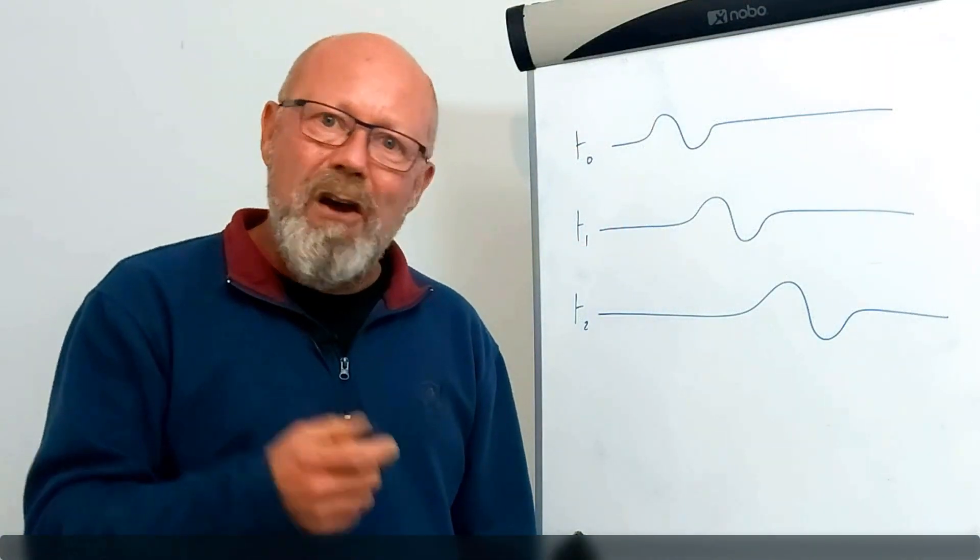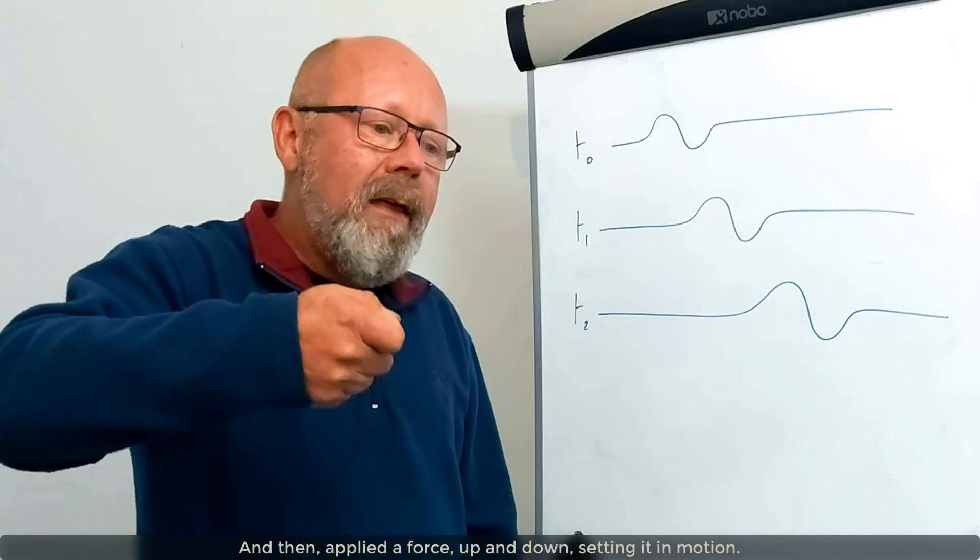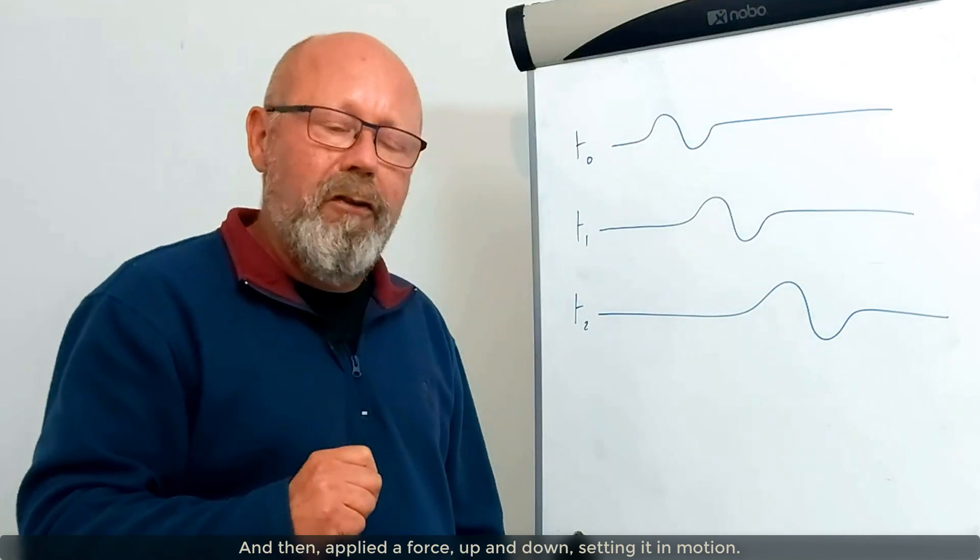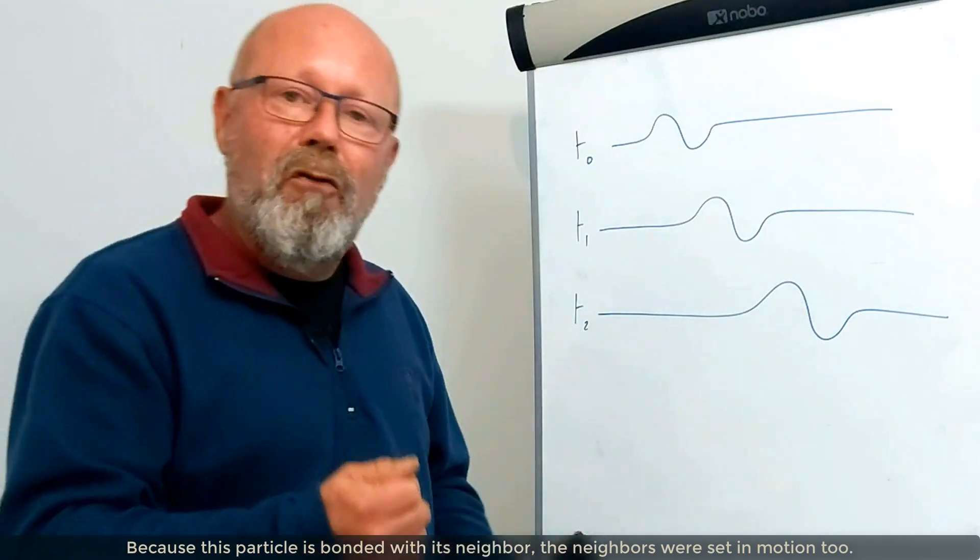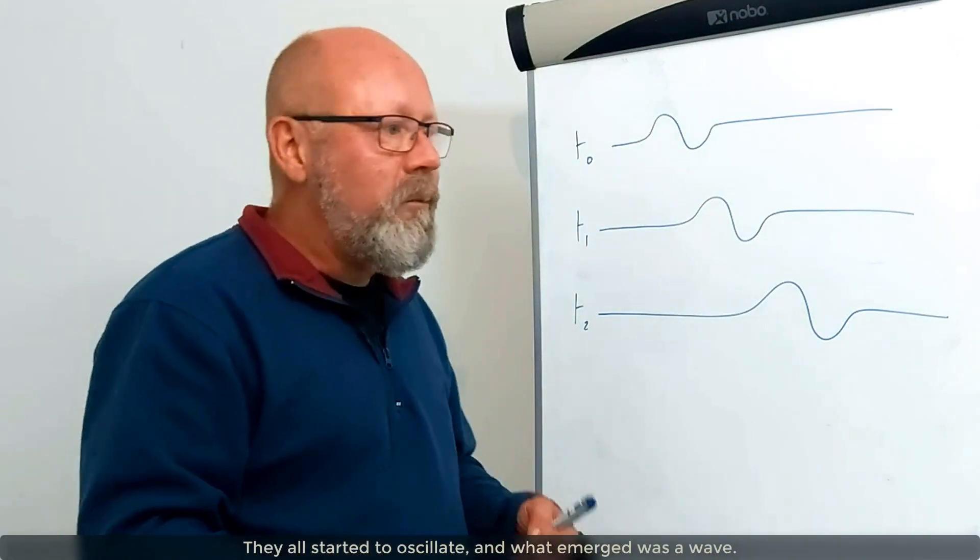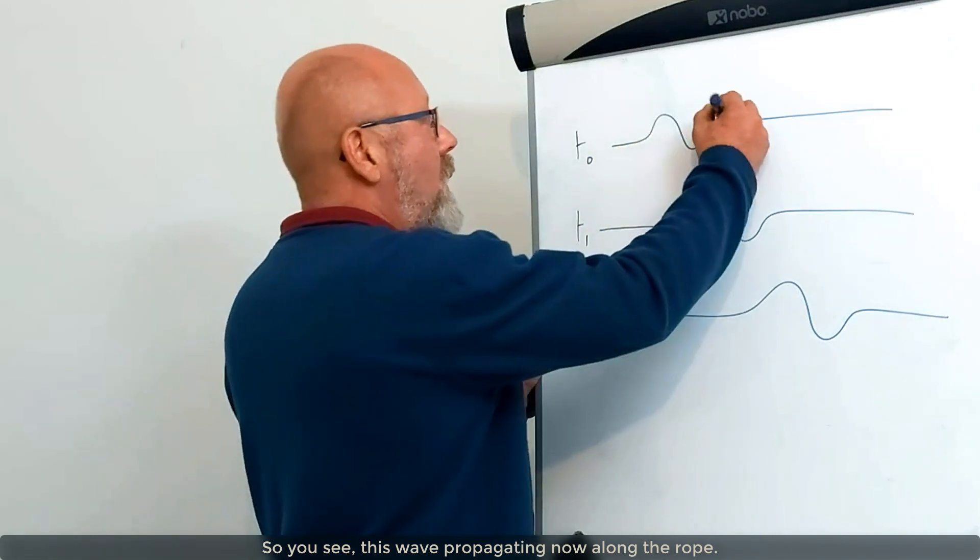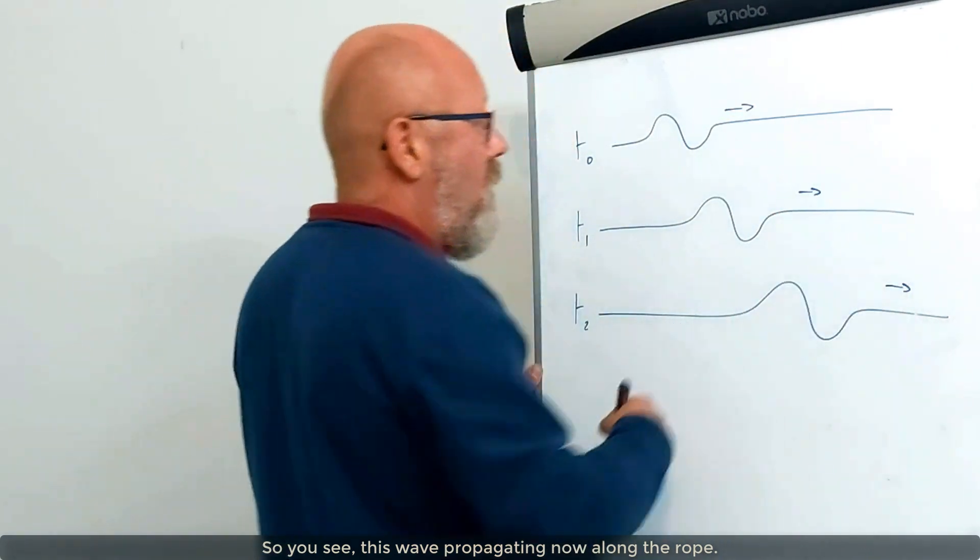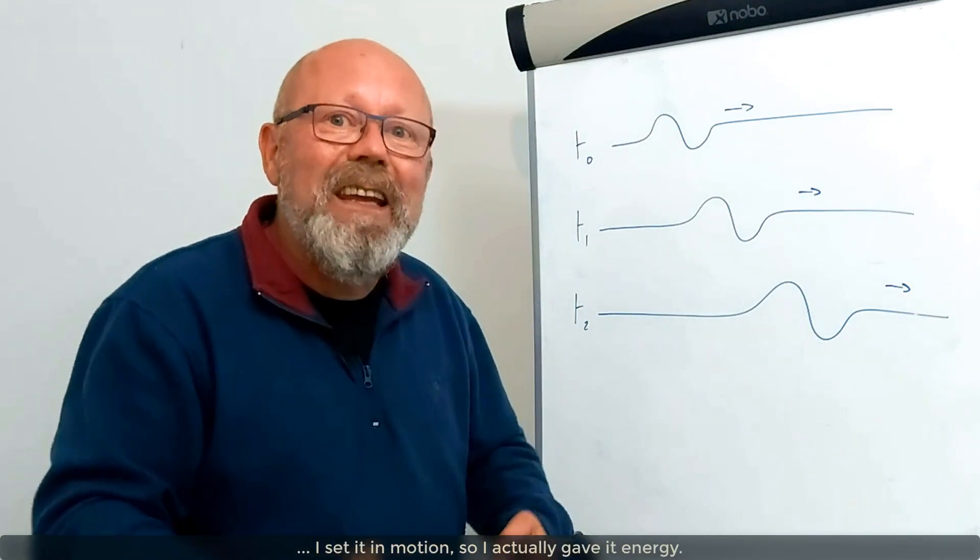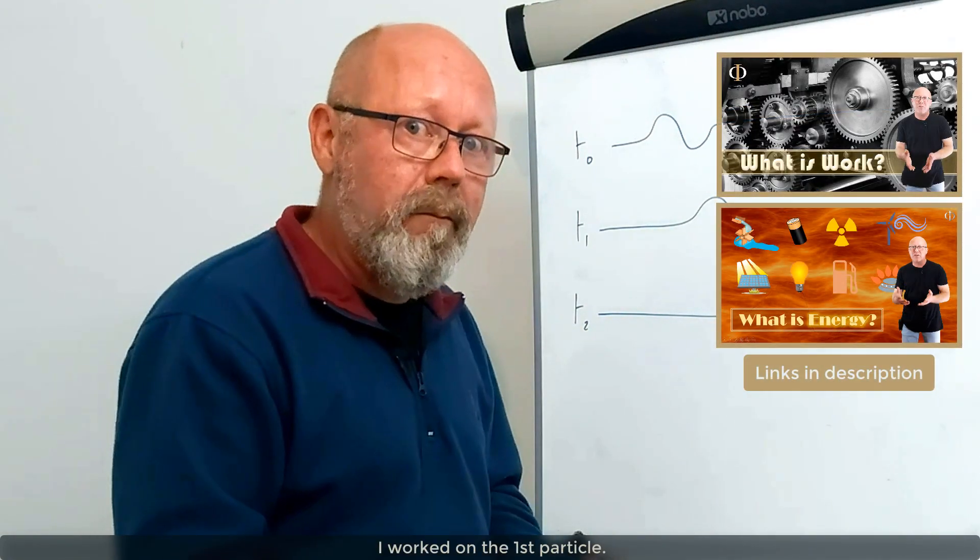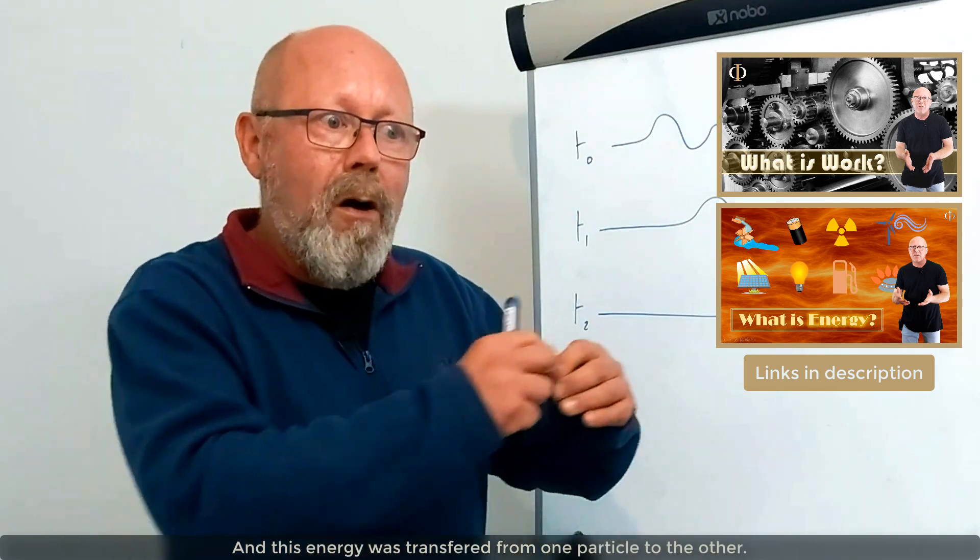Let's get back to the rope. Remember, I was holding the rope by its extremity, holding the first particle of the rope. And then I applied a force up and down and set it in motion. Because this particle was bonded with its neighbors, the neighbors started to be set in motion too. They all start to oscillate and what emerges is a wave. So you see this wave propagating now along the rope. When I applied the force on the first particle, I set it in motion. So I actually gave it energy. I worked on the rope. I worked on this particle. And this energy was kind of transferred from one particle to the other.